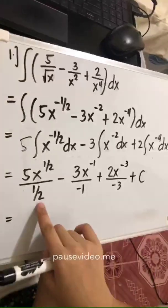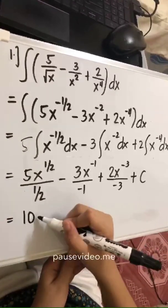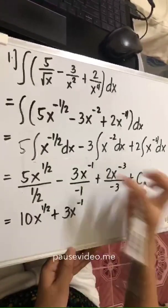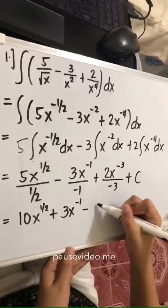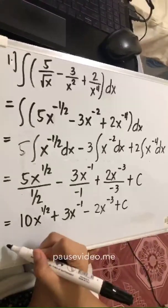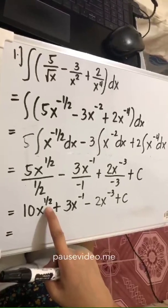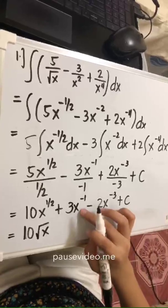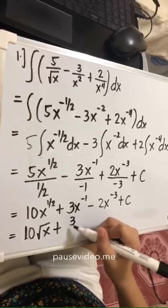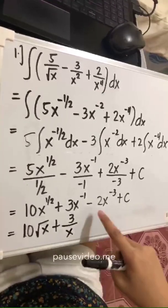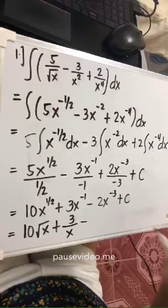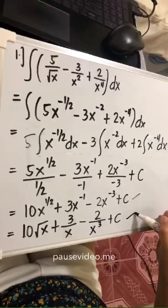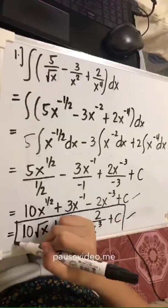Simplifying our answer: the reciprocal of 1/2 times 5 gives 10x raised to 1/2. Then negative divided by negative is positive 3x raised to negative 1. Then positive divided by negative gives negative 2x raised to negative 3, plus C. We can also transform this — since the exponent is 1/2, this becomes 10 times the square root of x. The negative exponents move to the denominator, giving us 3 over x, minus 2 over x cubed, plus C. Either form is acceptable, but the radical form is preferred.